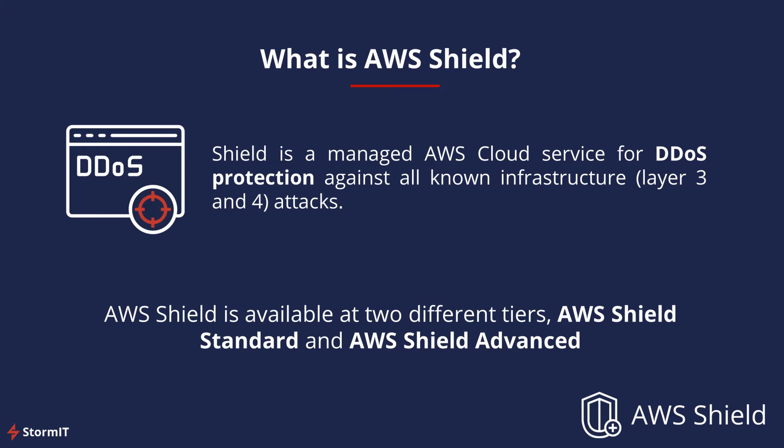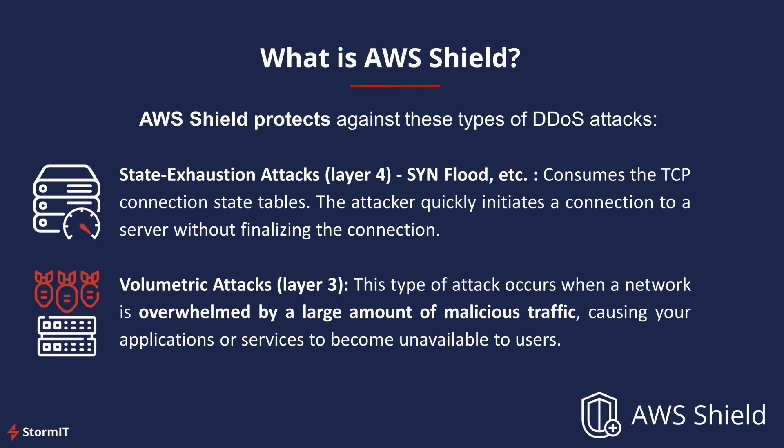AWS Shield is available at two different tiers: Shield Standard and Shield Advanced. In more detail, it protects against state exhaustion attacks on layer 4 of the OSI model, otherwise known as SYN flood. This type of attack tries to consume the TCP connection state tables — the attacker quickly initiates a connection to a server without finalizing it.